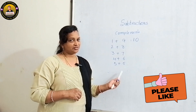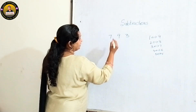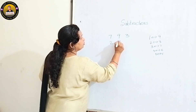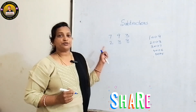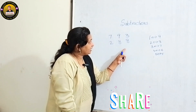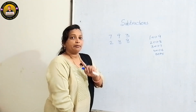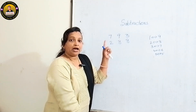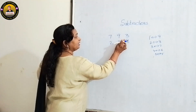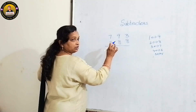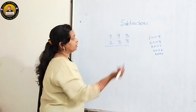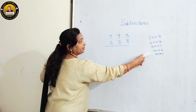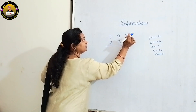Suppose we take 793 minus 288. Observe children — whenever I give a problem like this, first check match and mismatch. Match means the upper number is bigger; mismatch means the upper number is smaller. Here, 3 minus 8 — we can't subtract directly. Instead of borrowing, check the complement of 8, which is 2, then just add 2 to 3.